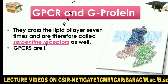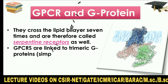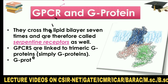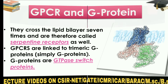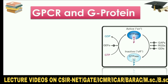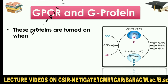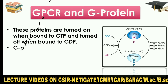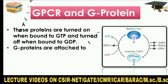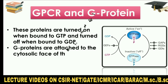GPCRs are linked to trimeric G-proteins, simply called G-proteins. G-proteins are GTPase switch proteins. These proteins are turned on when bound to GTP and turned off when bound to GDP. G-proteins are attached to the cytosolic face of the plasma membrane.